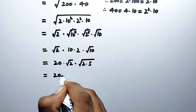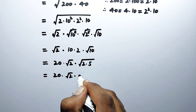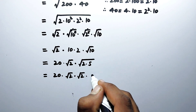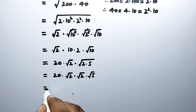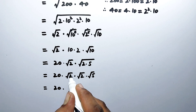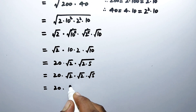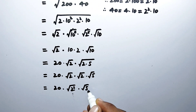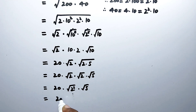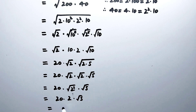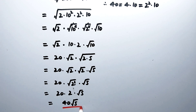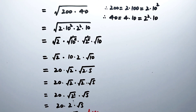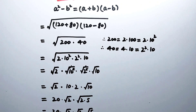Now we write 20 times square root of 10 as 20 times square root of 2 times square root of 5. Since square root of 2 times square root of 2 equals square root of 2 squared, this simplifies to 20 times 2 times square root of 5, which equals 40 times square root of 5. And that is our final answer. I hope you liked the video — please don't forget to subscribe to my channel for more videos. Thanks for watching, take care, bye!